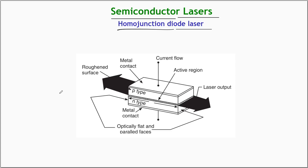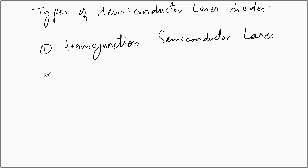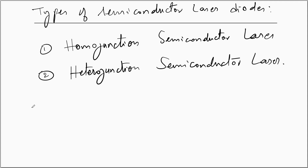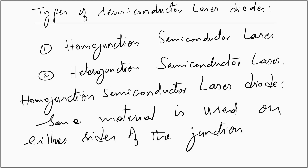There are two different types of semiconductor laser diodes. The first is the homo junction semiconductor laser and the second is the hetero junction semiconductor laser. In the case of a homo junction semiconductor diode, the same material is used on either side of the junction — doped with N-type on one side and P-type on the other. The host material remains the same on either side, and a laser from such a junction is called a homo junction semiconductor laser diode.